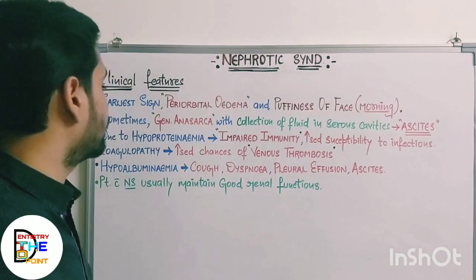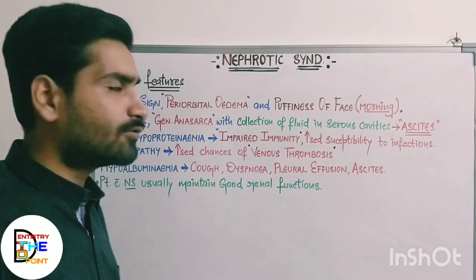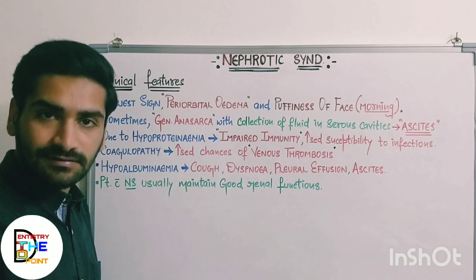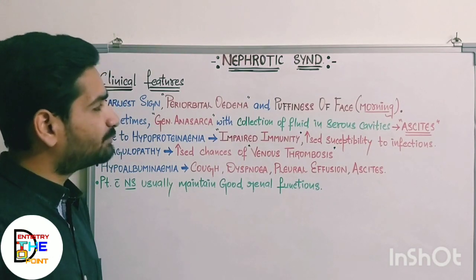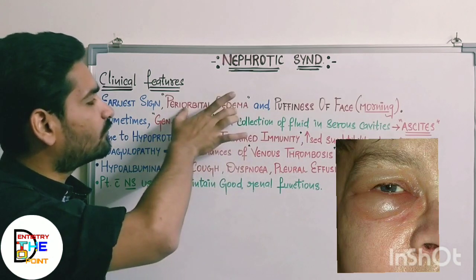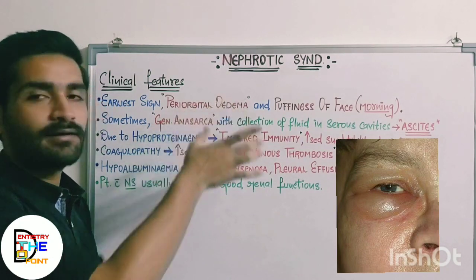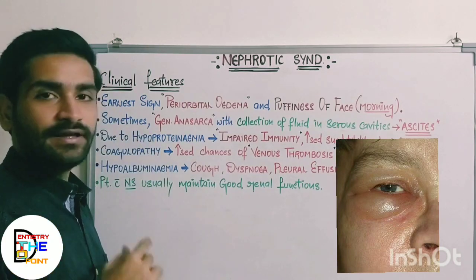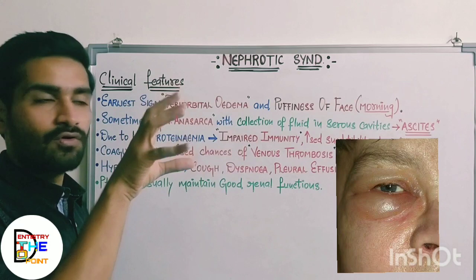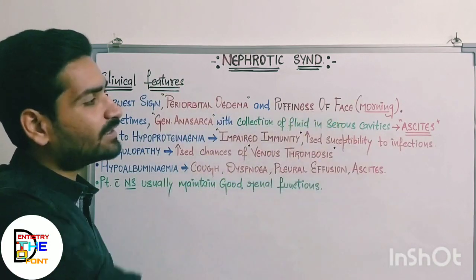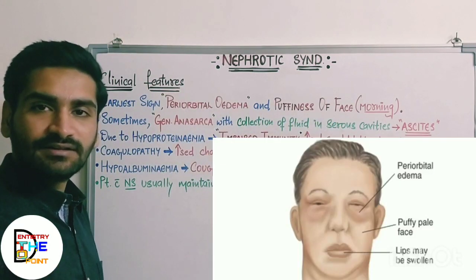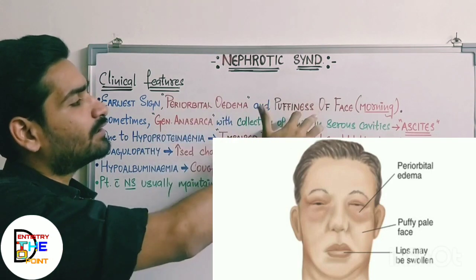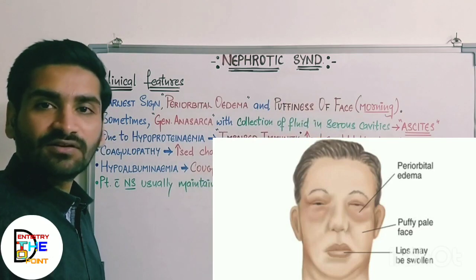Next, the clinical features of nephrotic syndrome. The earliest and most prominent sign is periorbital edema — swelling around the orbit, around the eyes. You will see swollen eyes and puffiness of the face in the morning. As soon as the patient awakens, periorbital edema is visible, and later the whole face appears swollen.